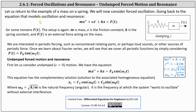Going back to the equation that models oscillation and resonance, we have mx'' + cx' + kx = F(t) for some non-zero function F(t). Recall that m is the mass, c is the friction or damping constant, k is the spring constant, and F(t) is an external force acting on the mass. We are interested in periodic forcing, such as non-centered rotating parts, or perhaps loud sounds or other sources of periodic force.